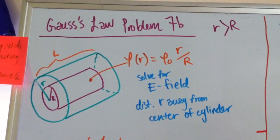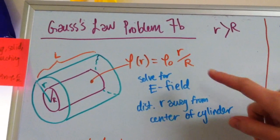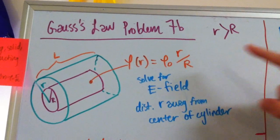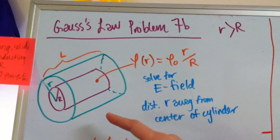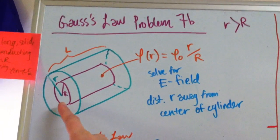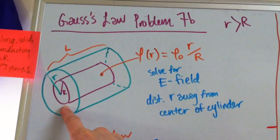Okay, so in this video we're going to be talking about Gauss's law problem 7b, where we have an infinitely long solid cylinder, non-conducting solid cylinder, of radius big R, this purple cylinder here,